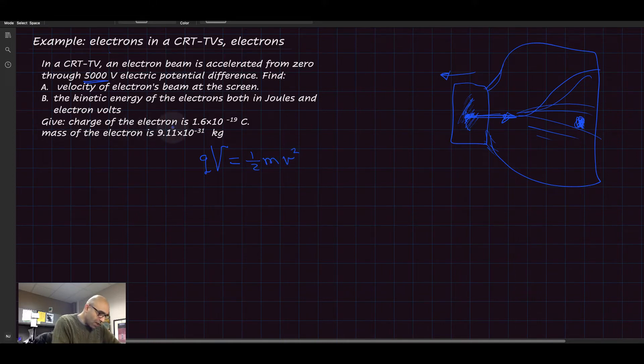The charge of the electron is 1.6 times 10 to the minus 19 coulombs, and the potential difference is 5000 volts. That must equal one half times the mass of the electron, which is 9.11 times 10 to the minus 31 kilograms.